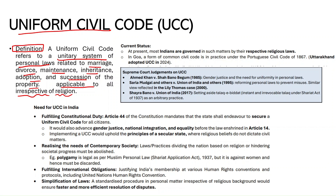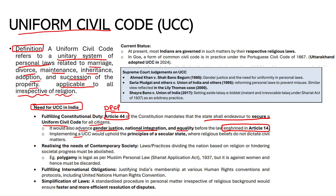Why do we need a Uniform Civil Code in India? Article 44 of the Constitution under Directive Principles of State Policy mandates that the state shall endeavor to secure a uniform civil code for all its citizens — making it a constitutional duty for the government. It will also advance gender justice, national integration, and equality ensured under Article 14. Implementing a UCC would also uphold the principle of a secular state, where religious beliefs do not dictate civil matters.